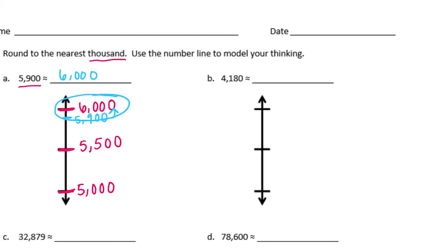For B, we have 4,180 is about equal to. I'm going to put 4,000 down here, and then 5,000 up here. In the middle, we would have 4,500, and then 4,180 I need to plot somewhere here on my line. So 4,180 would be about right there, which means we're going to round down to 4,000.